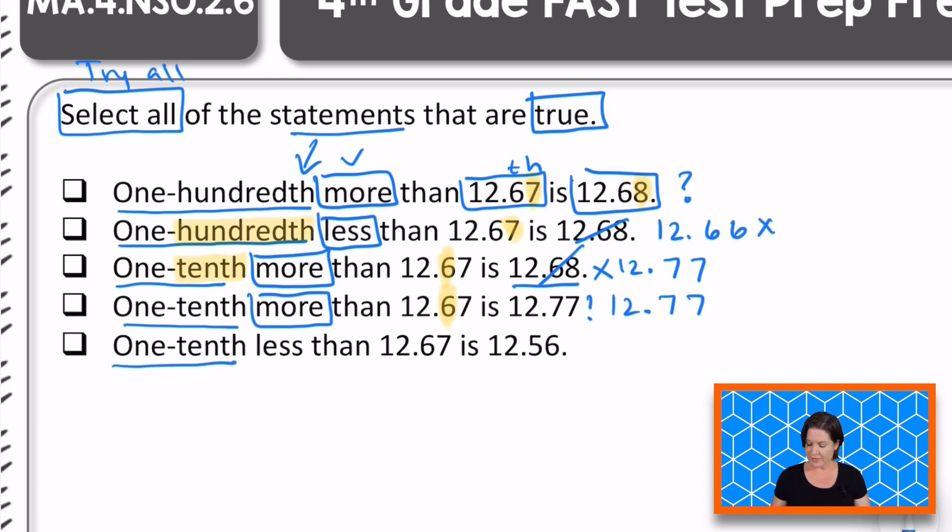And then the next one: one-tenth less than 12 and 67 hundredths. The tenths place is, the digit six is in the tenths place. If we are bumping that down, that would be 12 and bump the six down to five, and that would be 57. This is saying 12 and 56 hundredths. We need it to be 12 and 57 hundredths. For this one, both the tenths and the hundredths are one tenth and one hundredth less. That is not what we want. So should we keep this one or eliminate it? Eliminate.